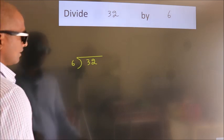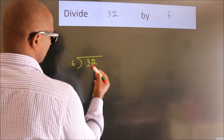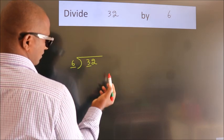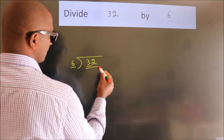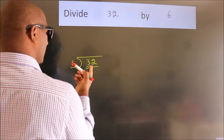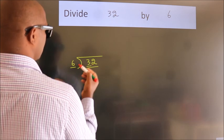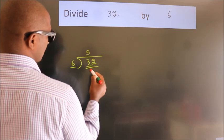Next. Here we have 3. Here 6. 3 smaller than 6. So we should take 2 numbers, 32. A number close to 32 in 6 table is 6 fives 30.